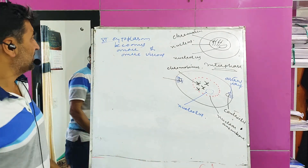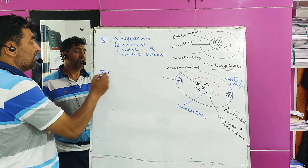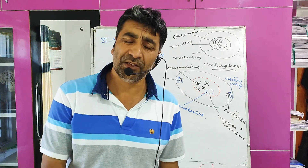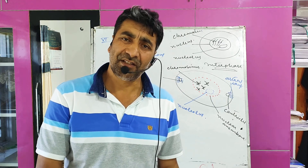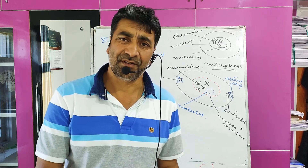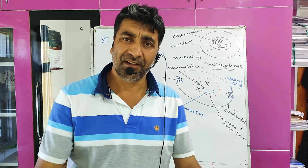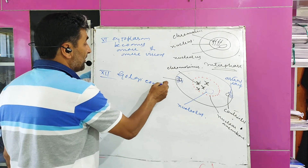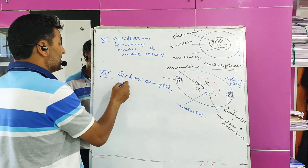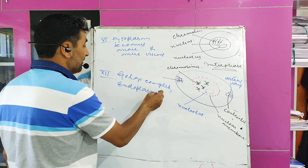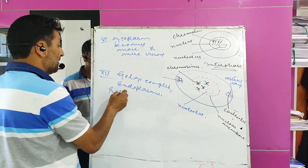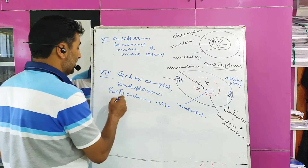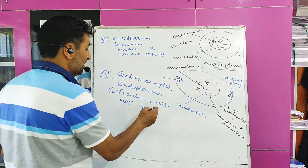Next and last change which occurs during prophase: Golgi complex and endoplasmic reticulum also disappear — that is, they are not seen in the cell.